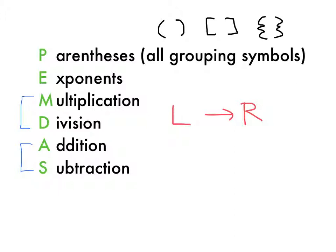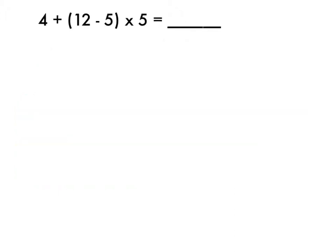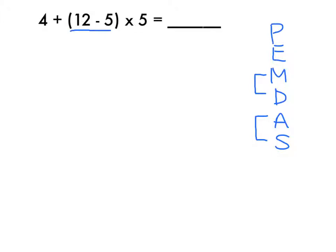Let's try solving a few problems to practice. So with this problem, the first thing we want to do is set up a PEMDAS checklist — please excuse my dear Aunt Sally. I always like to put little markers to remind myself it's multiplication or division whichever comes first, and addition or subtraction whichever comes first. We start with P for parentheses, and I see parentheses with 12 minus 5. So we solve 12 minus 5, which is 7.